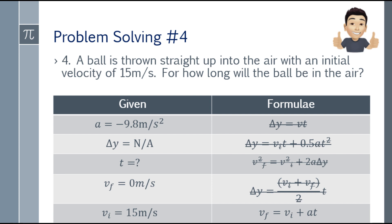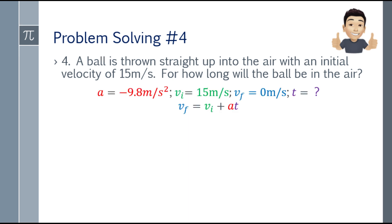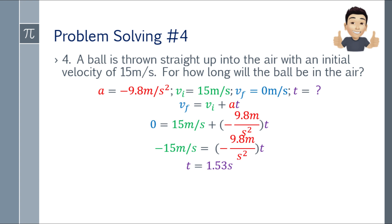Delta y is not applicable — it's neither asked nor given. Using the fifth formula — final velocity equals initial velocity plus acceleration times time: 0 equals 15 plus negative 9.8 times t. Moving 15 to the left: negative 15 equals negative 9.8 t. Dividing both sides by negative 9.8, time equals 1.53 seconds.